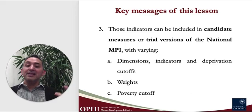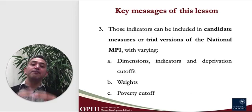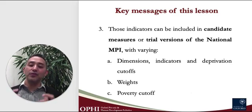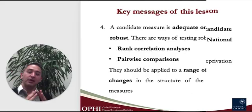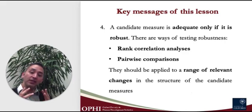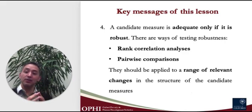In the end, if they are conceived as potential measures of the national MPI, then they need to have a meaning and they need to be useful for national policy priorities. Once a small set of selected candidate measures has been defined, before accepting one candidate measure as a valid one, we need to make sure that it is robust.